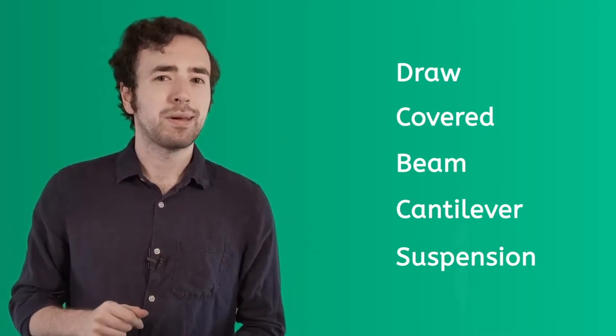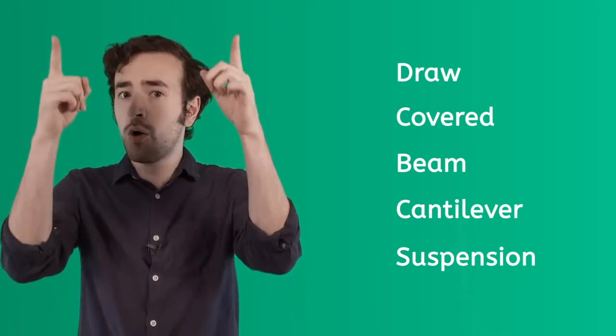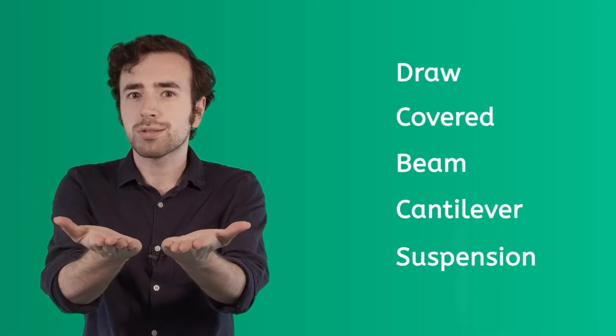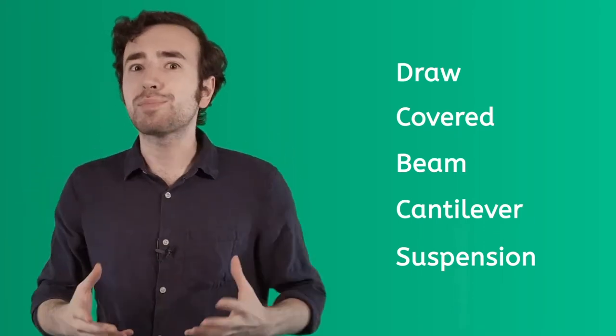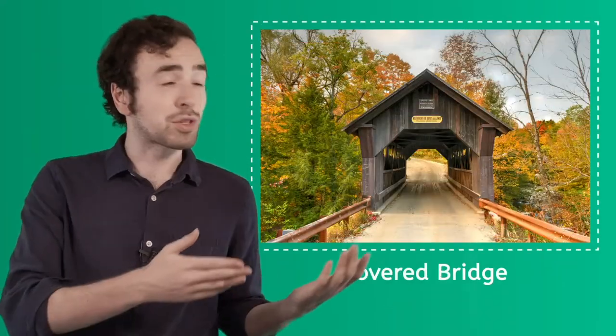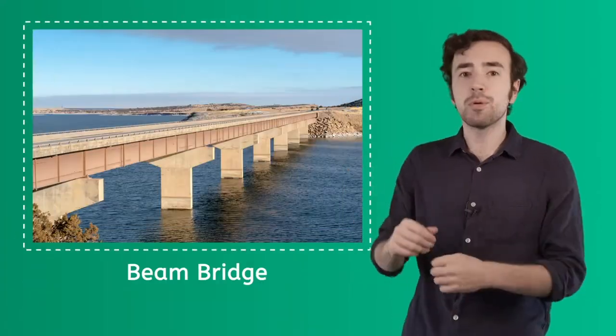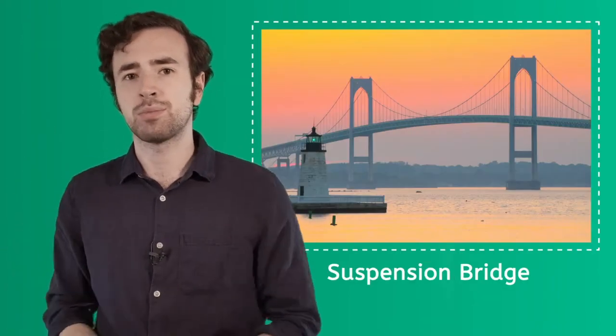Here's a hint. Here to there, there to here, up and over and across. Think you know it? These are all types of bridges. Here's a drawbridge, there's a covered bridge, a beam bridge, a cantilever bridge, and a suspension bridge. There are other kinds of bridges too.